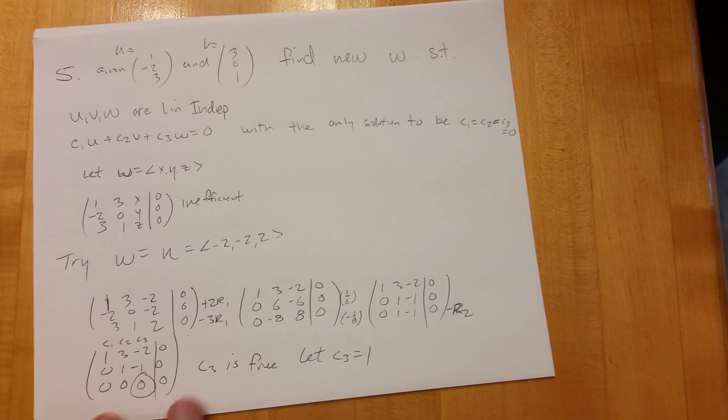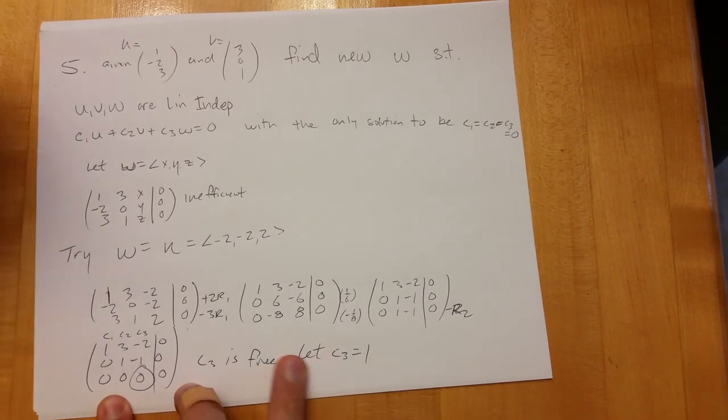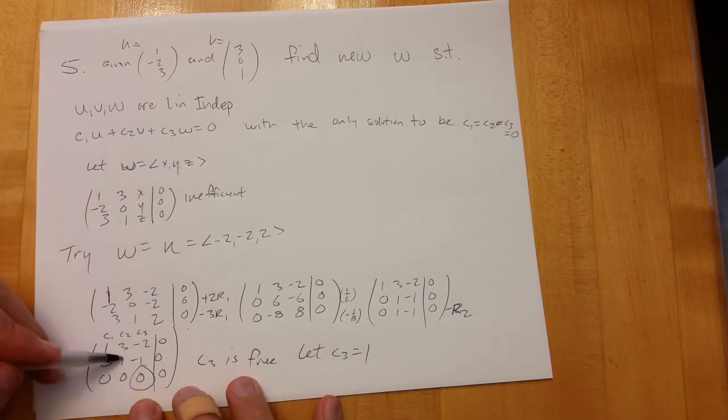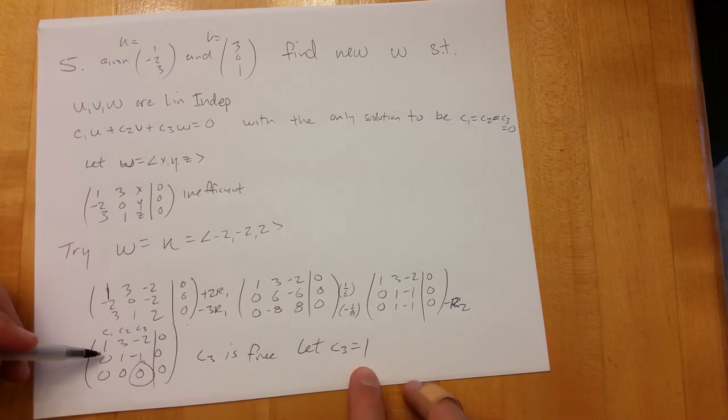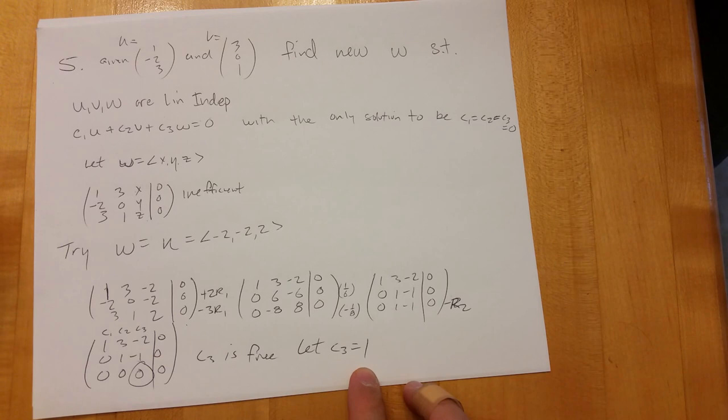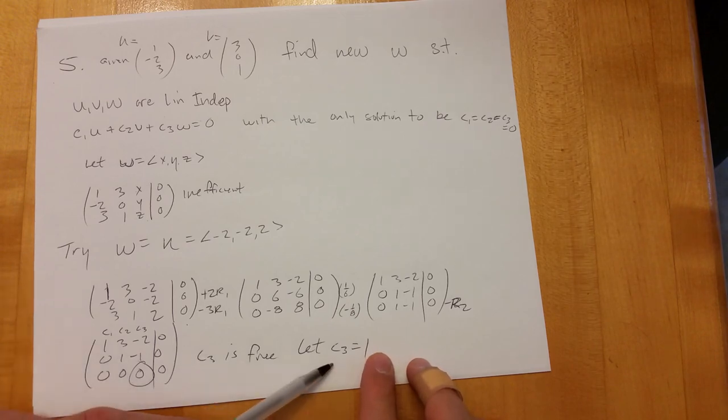Let c3 equal like one for example. If everything we did is correct up to here, what this means is c3 is one. We'll be able to go and figure out what c2 and c1 are based off of this, and we'll have a non-trivial solution.